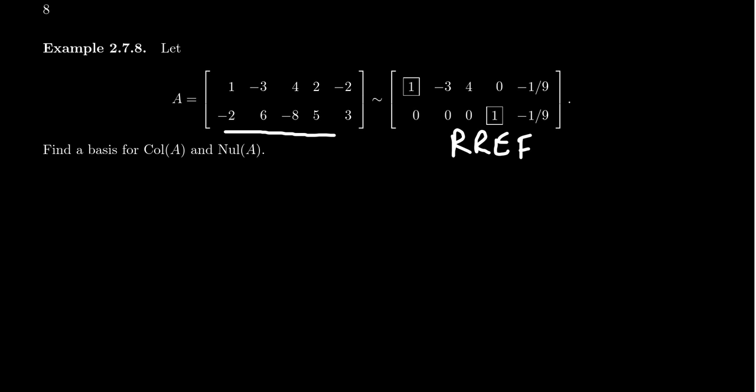So given this matrix A, we want to find a basis for the column space and the null space of A, and I actually want to do it relatively quickly. To find the column space of A, you have to identify the pivot columns of the matrix, which you'll need an echelon form to do that, RREF will do that.